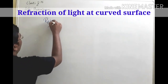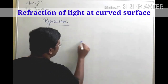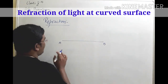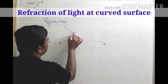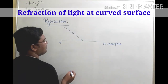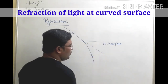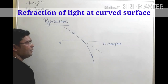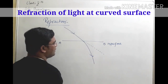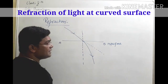So what is refraction? Consider an interface dividing two surfaces. When light falls on this interface, the light bends. We all know that light normally travels in a straight line, but in this case the light has bent. Such a phenomenon where light bends is called refraction.